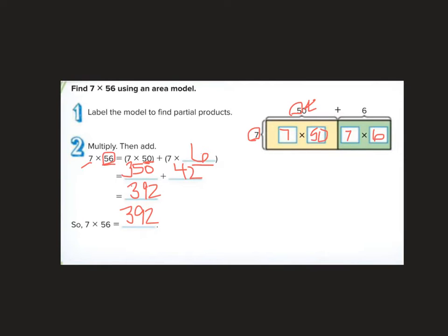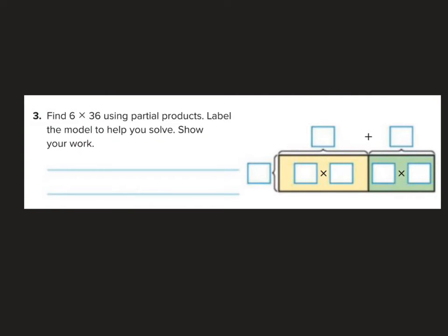All right, let's try one more problem here. So find 6 times 36 using partial products. Okay, so I'm going to do 6 times 30 plus 6. So I'm going to do 6 times 30 plus 6 times 6. I know that 6 times 6 is 36. 6 times 3 is 18. Add the 0, 180. 180 plus 36 is 216.